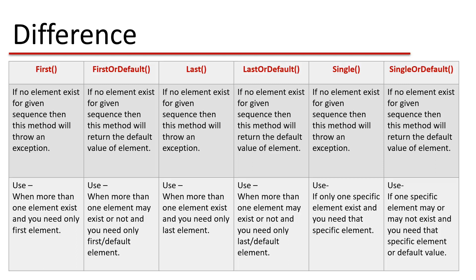Similarly, if there is no element for a given sequence, the Last method will throw an exception. If you use LastOrDefault and there is no element in the sequence after filtration, it will return the default value. For the Single method, if no element exists, it will throw an exception. For SingleOrDefault, if no element exists, it will return the default value of the element.